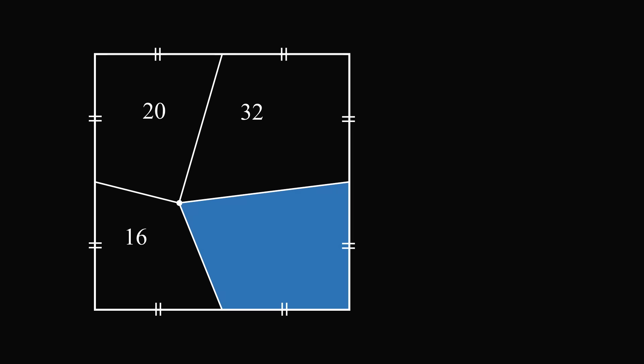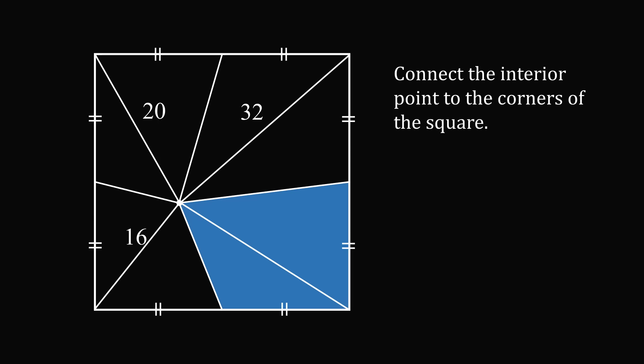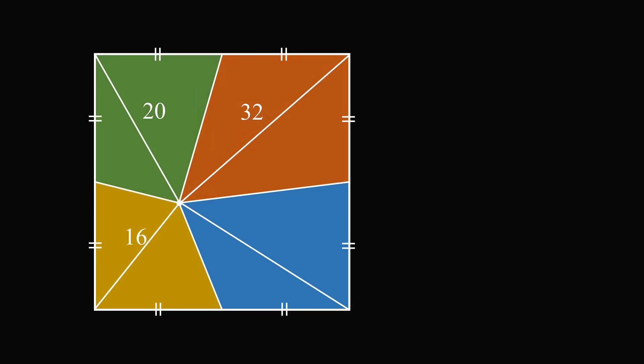Let's first solve the viral problem. We have a square and a point in the interior of the square. The point is connected to the midpoints of the sides, dividing the square into four regions. The areas of three of the regions are given as 16, 20, and 32 square units. To get started, let's create some triangles by connecting the interior point to the corners of the square — four line segments dividing the square into eight different triangles. Let's color code these regions: the region with area 16 is yellow, area 20 is green, and area 32 is brown.